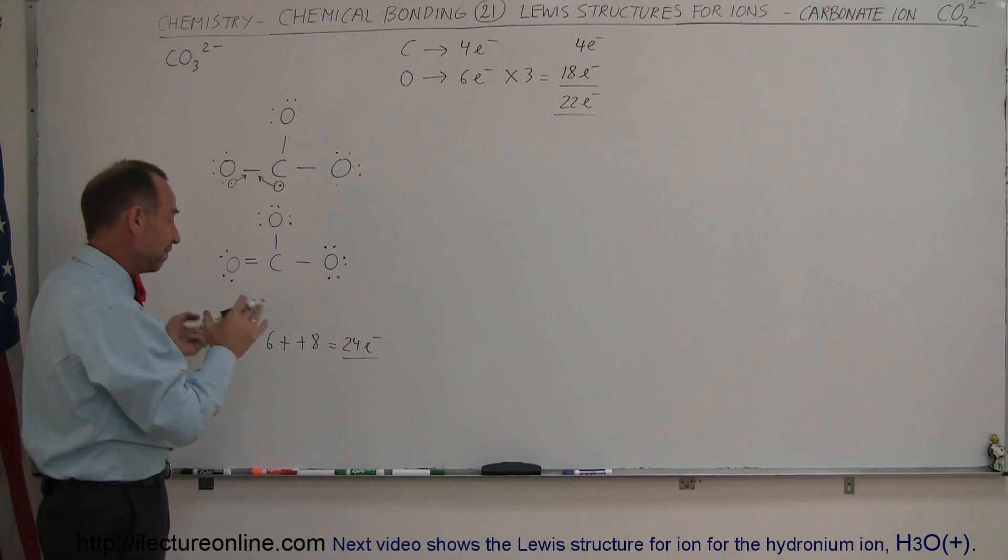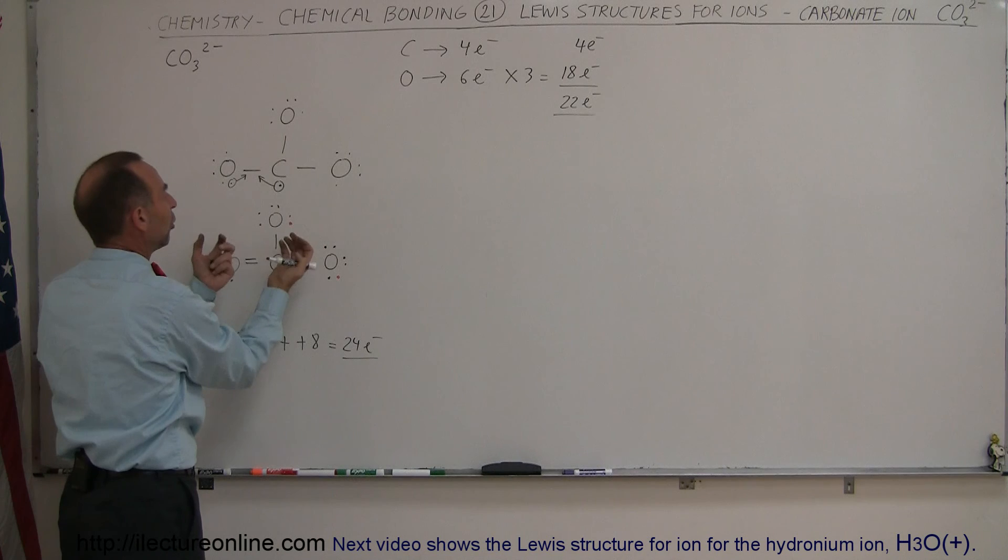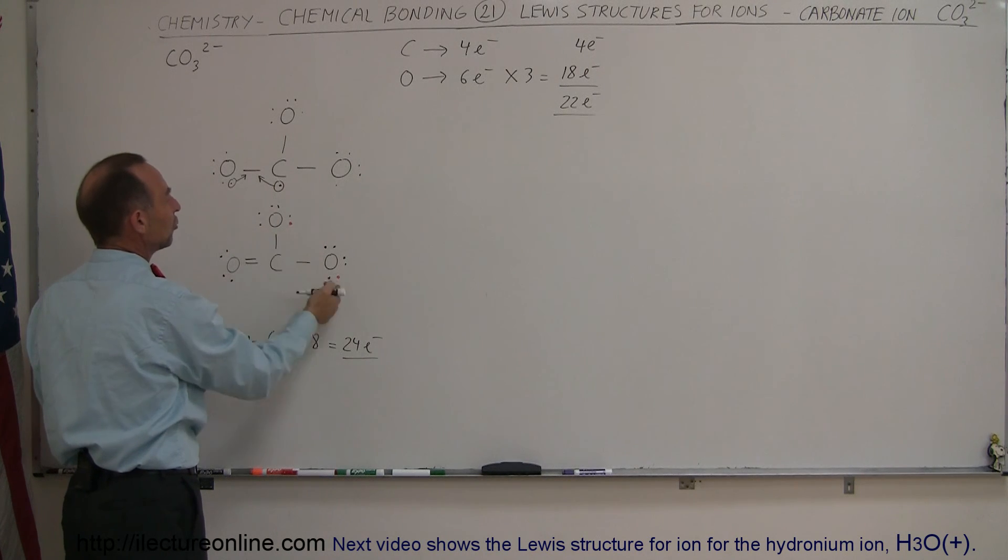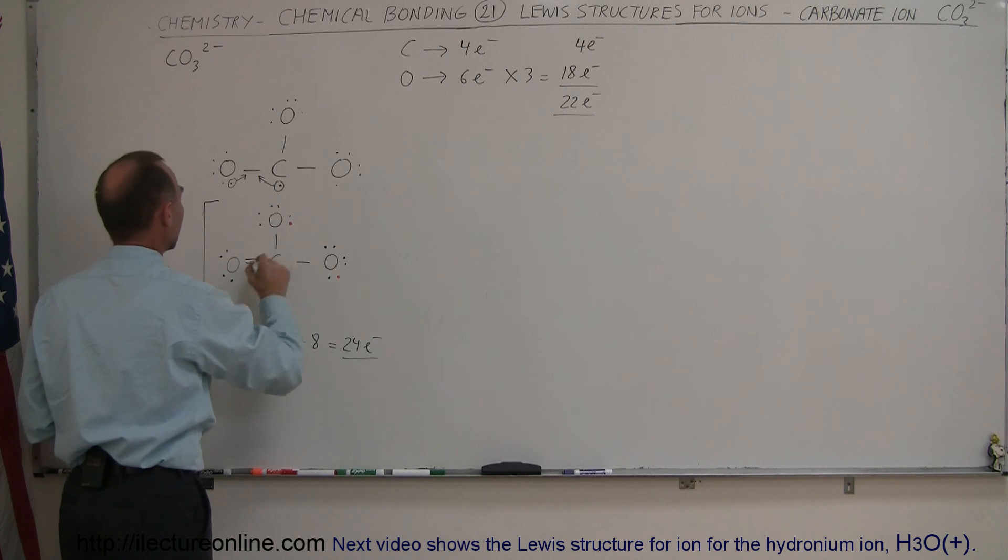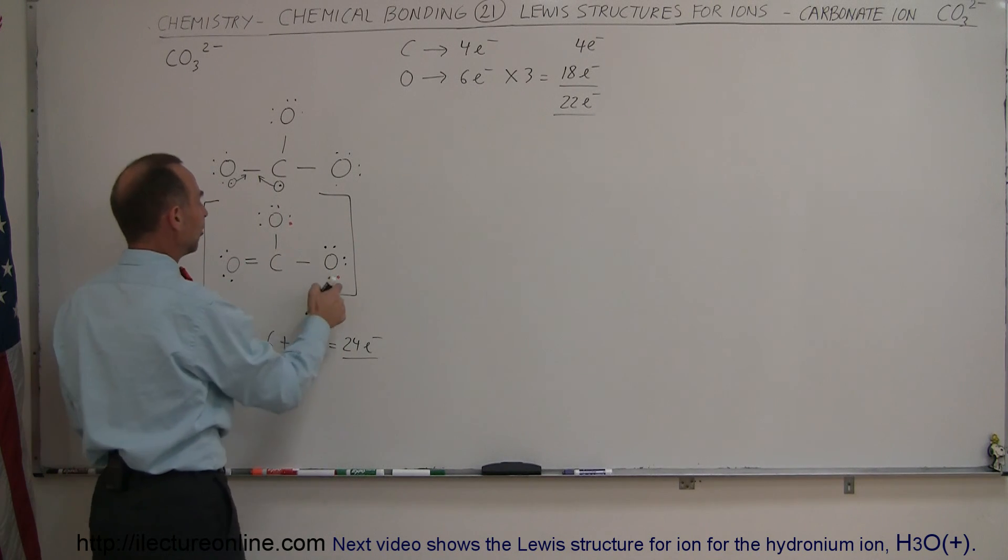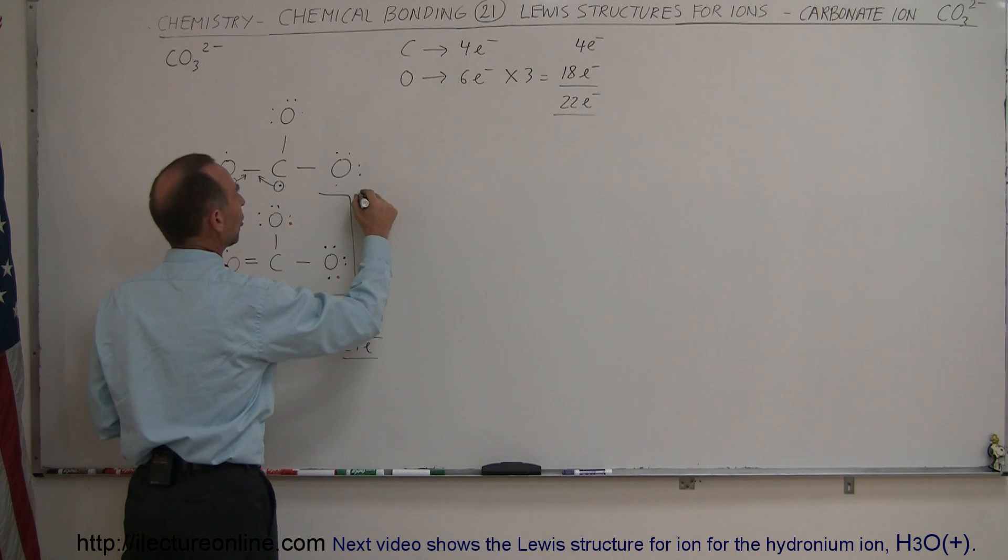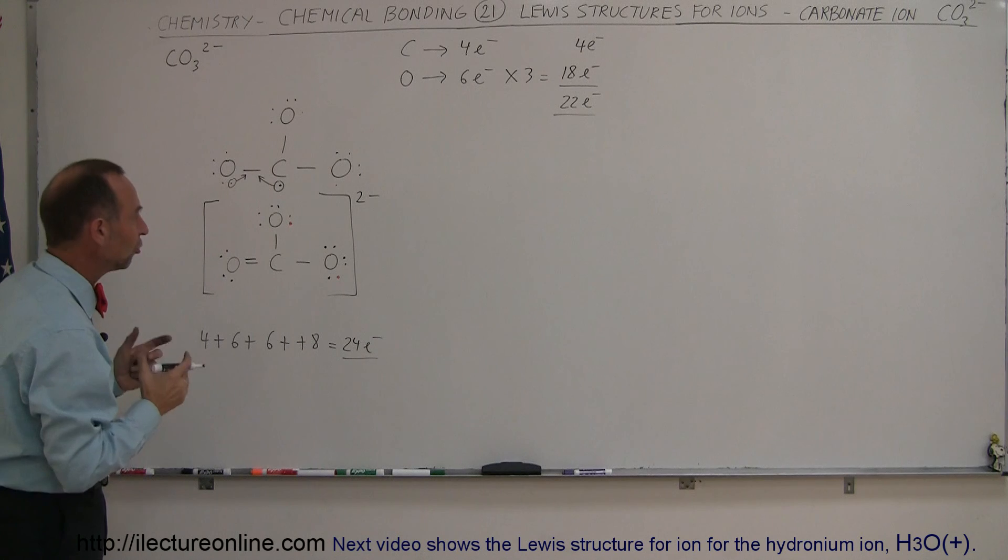So normally, that would be a violation of the rules, except in this case, there's so much pull to pull in more electrons to these two oxygens because they're very electronegative, that this has now become an ion instead of a simple molecule. And since there's two extra electron charges, we're then going to write down the charge on that ion, which is two negative.